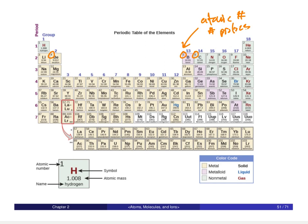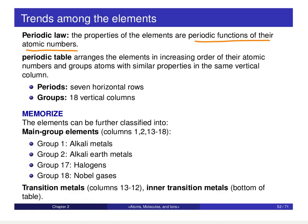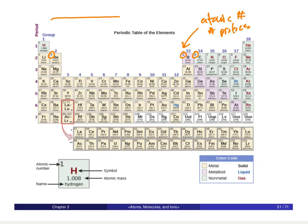There are numerous different periodic laws and periodic trends we'll see throughout the course. The first arrangement we notice is that if you look at the atomic numbers and how they're arranged, we see an increasing order. If we move from left to right across the periodic table, we have an increasing atomic number from left to right.